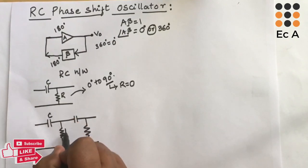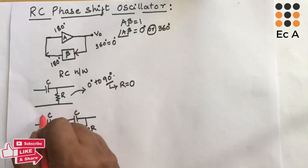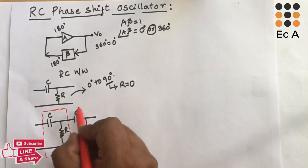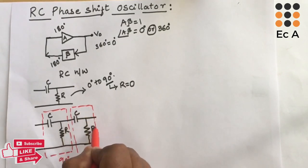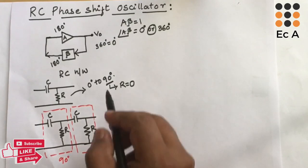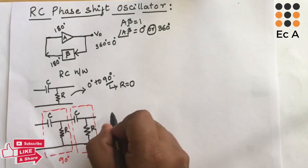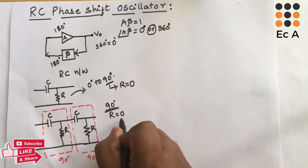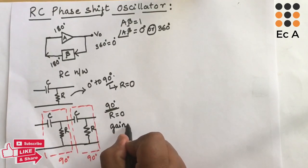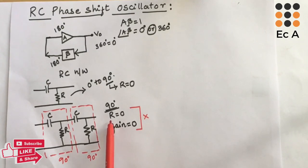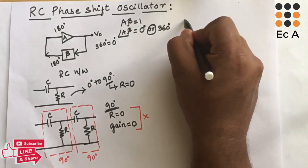To obtain 180° phase shift, we could use two RC networks, each providing 90° phase shift. However, to get the maximum 90° from a single RC network the resistor must be zero, but if resistor is zero the overall gain of the network also becomes zero. This condition is not acceptable, so we cannot make the resistor zero.